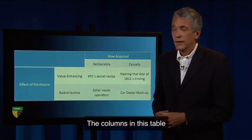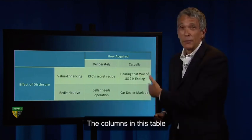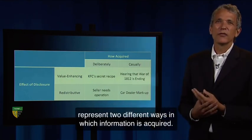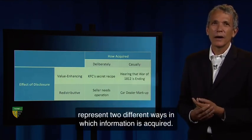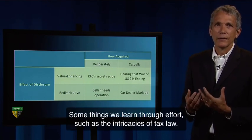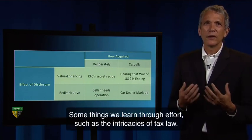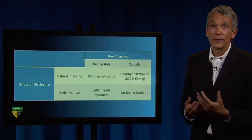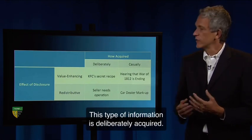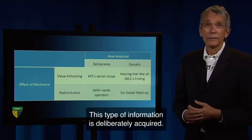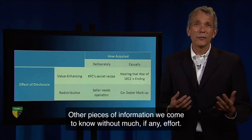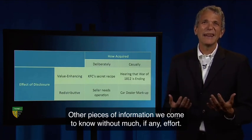The columns in this table represent two different ways in which information is acquired. Some things we learn through effort, such as the intricacies of tax law. This type of information is deliberately acquired. Other pieces of information we come to know without much, if any, effort.